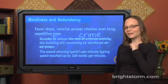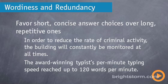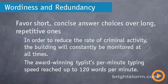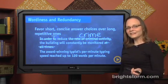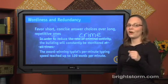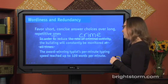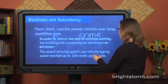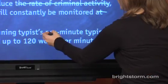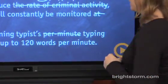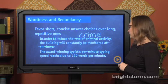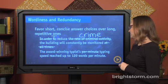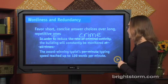Let's try the second example: "The award-winning typist per-minute typing speed reached up to 120 words per minute." This is a pretty short sentence but it's still repetitive and longer than it should be. Since we have "per minute" at the end, we probably don't need "per-minute typing speed" earlier in the sentence.